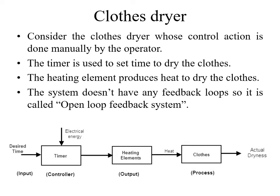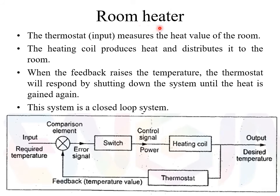For a closed loop system example, we are going to see the room heater. The room heater is used to keep the room warmer. In the block diagram of the room heater, the input is the required temperature set by the user. This input is given to the comparison element, which is used to compare two signals — one from the input and another from the thermostat. The thermostat is a sensor that senses the actual room temperature and converts it to a corresponding electrical signal.